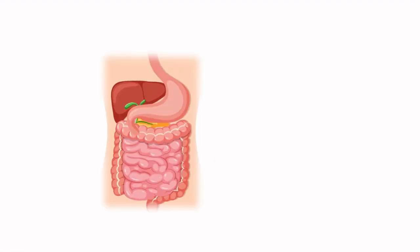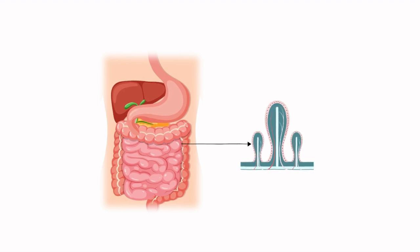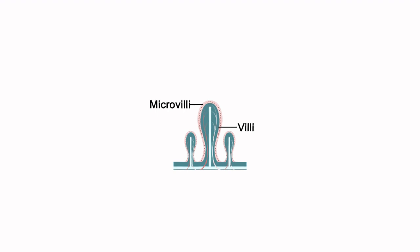Absorption occurs due to the abundant finger-like projections called villi that line the interior wall of the small intestine. Villi are further covered with even smaller, hair-like structures called microvilli. Their job is to increase the surface area so that each villus can absorb the maximum amount of nutrients. Each villus contains capillary beds as well as lymphatic vessels called lacteals. Fatty acids absorbed from broken-down chyme pass into the lacteals, while other absorbed nutrients are taken to the bloodstream through capillary beds.